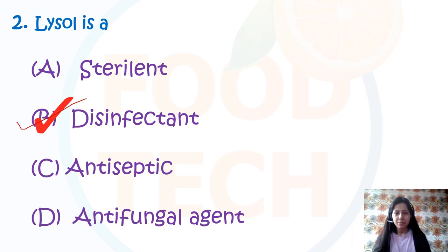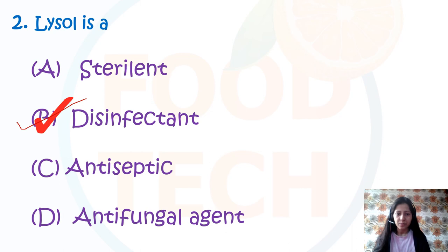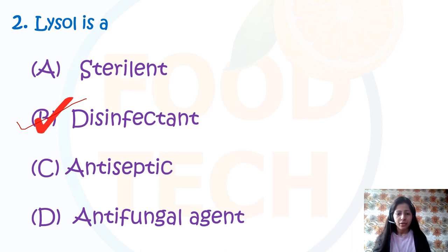A disinfectant is a chemical agent that is used to destroy or eliminate microorganisms on the surface of an object. Whereas antiseptics are substances that are applied on living tissues to reduce the risk of infection or sepsis or putrefaction. Antifungal agents are a type of medication or chemical used to treat fungal infections. So Lysol is a disinfectant.